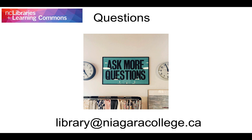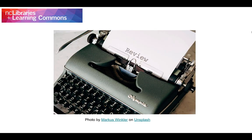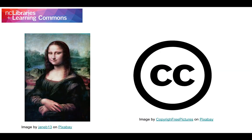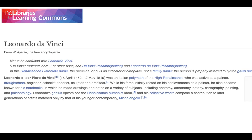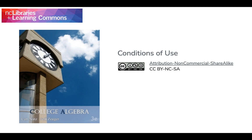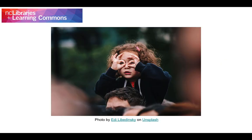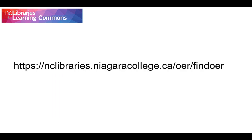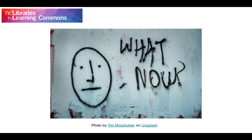To recap: both items in the public domain and items with a Creative Commons license can be defined as OER, so long as they are being used for educational purposes. You can identify if something is in the public domain by researching the death date of the original creator. You can identify if something is in the Creative Commons by looking for the license. You can easily find OER by searching through OER repositories. For a detailed list of OER repositories, check out the following website. In our next OER tutorial, we'll take a closer look at the process of adopting, adapting, or creating OER for use in the classroom at Niagara College.